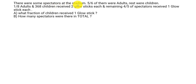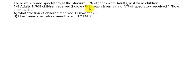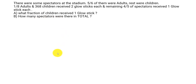There were some spectators at the stadium. Five-sixths of them were adults. The rest were children. One-eighth of adults and 368 children received two glow sticks each. And the remaining four-fifths of spectators received one glow stick each. What fraction of children received one glow stick? And how many spectators were there in total?